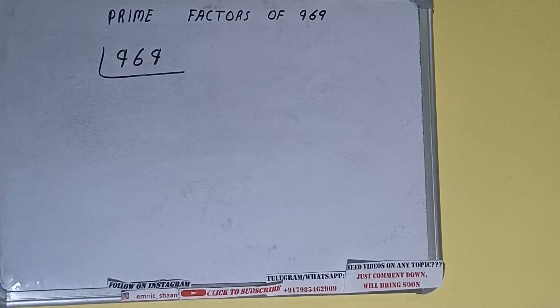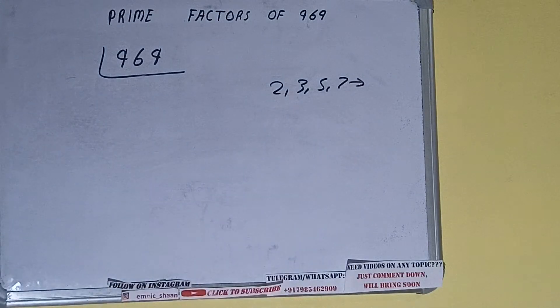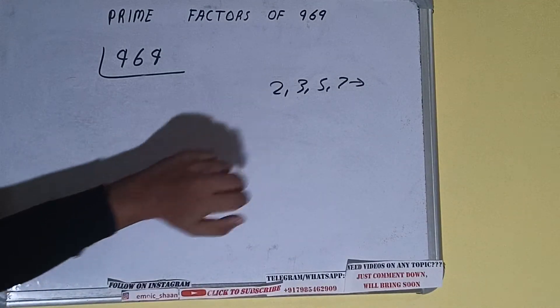The next thing we need to know about is what are prime numbers. Prime numbers are numbers that are divisible by 1 and the number itself, like 2, 3, 5, 7, and so on. We'll check with the lowest prime number we have, that is 2.